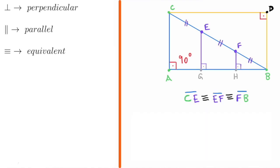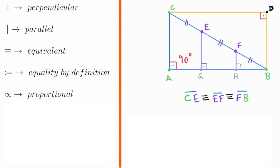Equivalent. We can construct similar triangles ABC, GBE, and HBF such that the sides CE, EF, and FB are congruent or equivalent. Column equal means equality by definition.